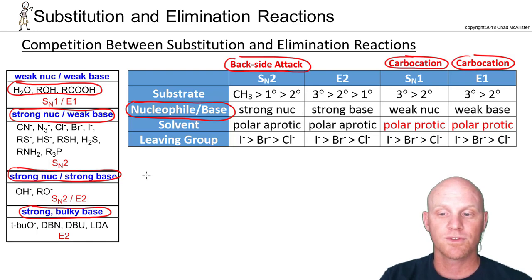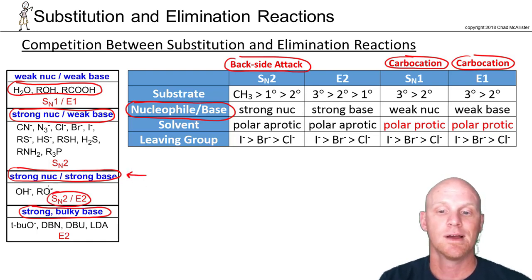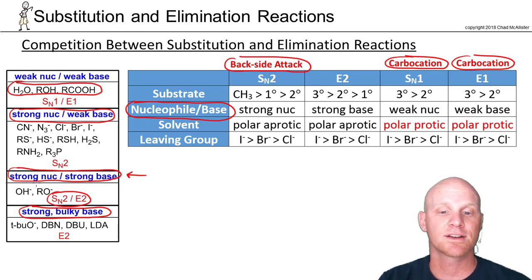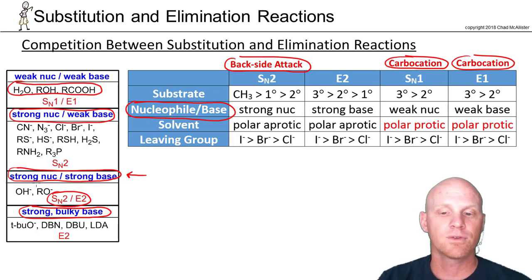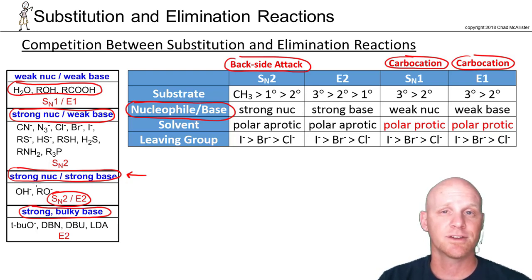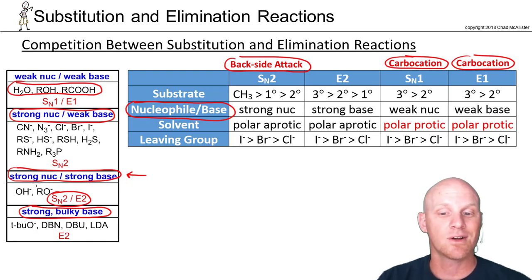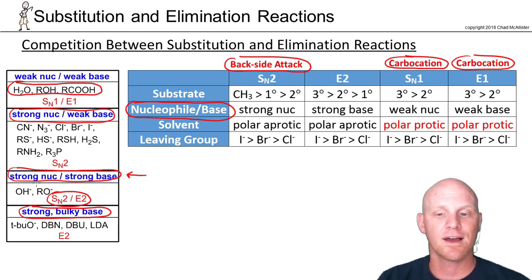If you're both a strong nucleophile and a strong base, you might have to worry about competition between SN2 and E2. Strong nucleophiles that are also strong bases are typically hydroxide or alkoxide — sodium hydroxide, sodium methoxide, sodium ethoxide. Note that for a tertiary halide, you don't have to worry about SN2 since backside attack is blocked. For a methyl halide, you can only do SN2 because elimination requires at least two carbons. For primary and secondary halides, you'll see competition between SN2 and E2.